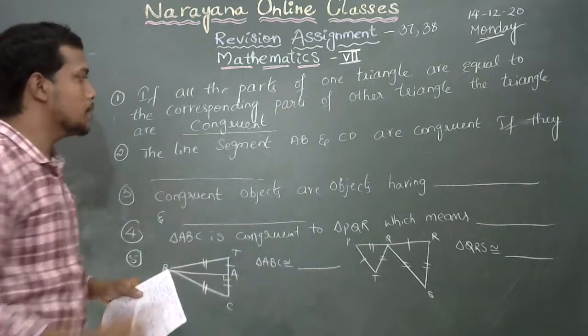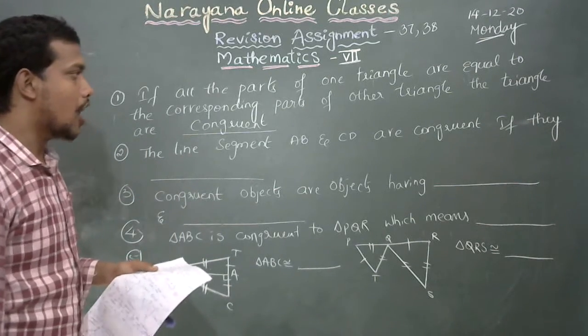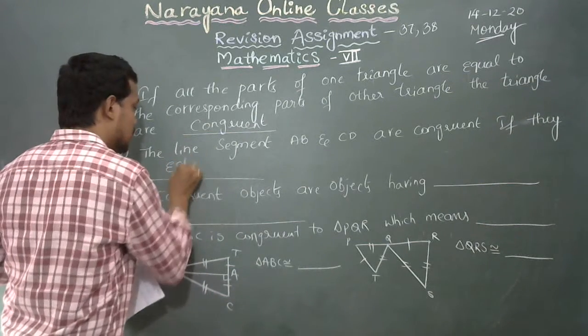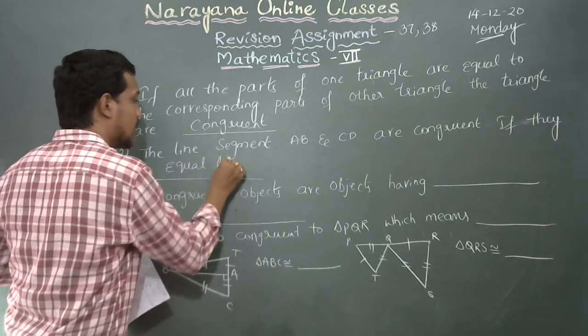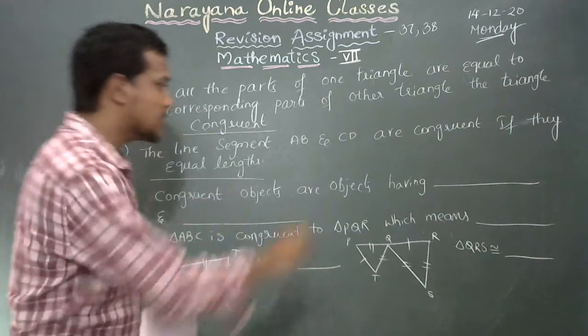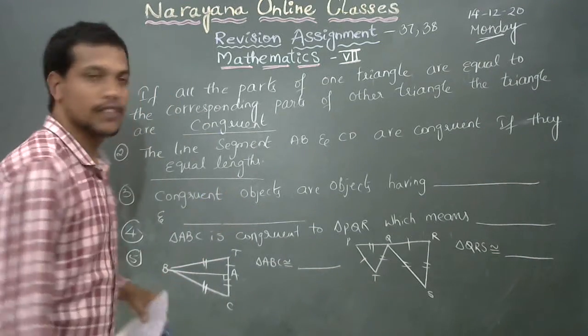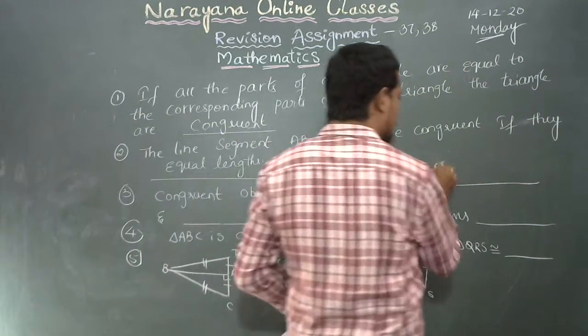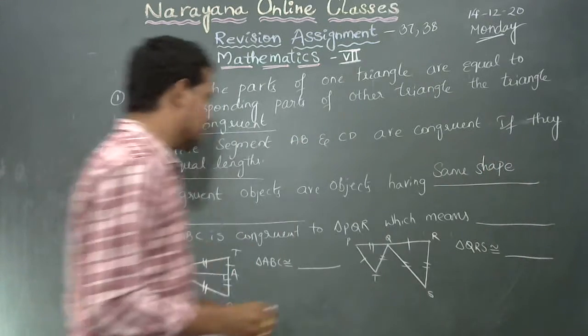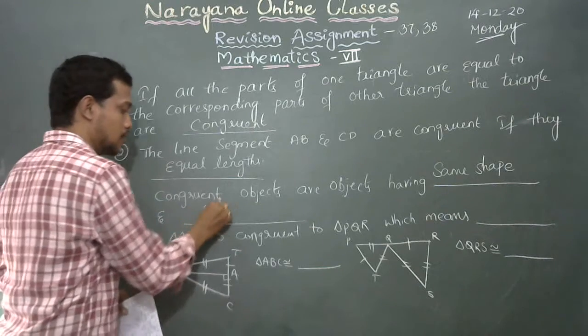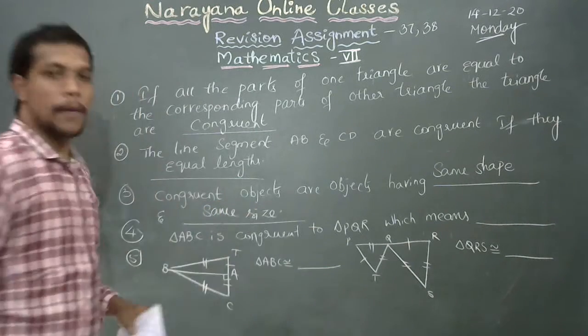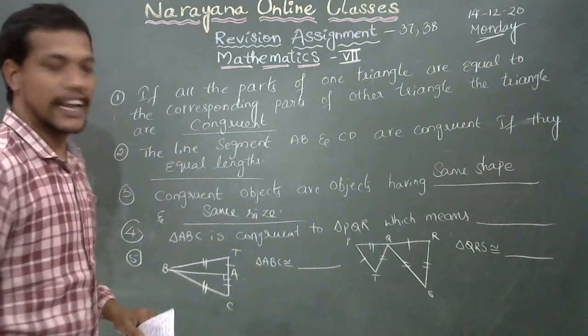If line segment AB and CD are congruent, they have equal lengths. Congruent objects are objects having the same shape and same size. Shape and size should be same when two objects are congruent.